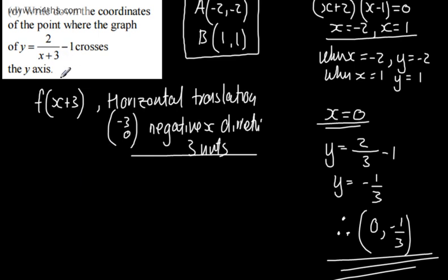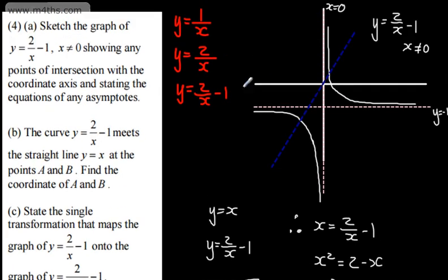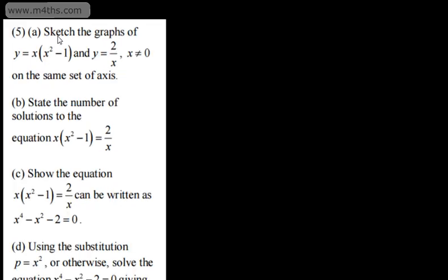If you wanted to know where this crosses the x-axis, set y = 0 — by the looks of it, that's going to be x = -1. So that's question 4 done — a nice bit of graph sketching. In question 5a, we're asked to sketch the graphs of y = x(x² - 1) and y = 2/x, where x ≠ 0, on the same set of axes.